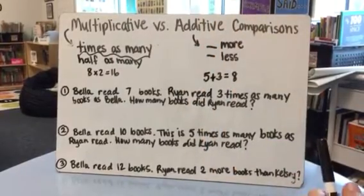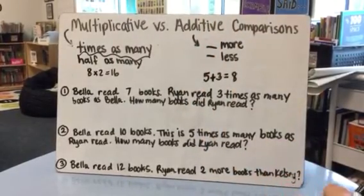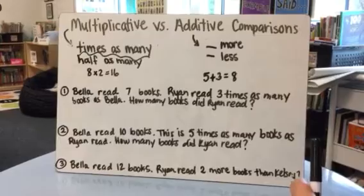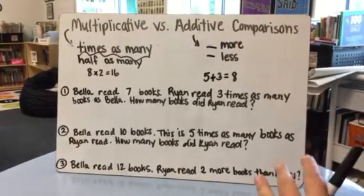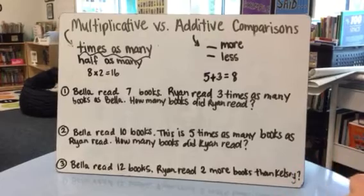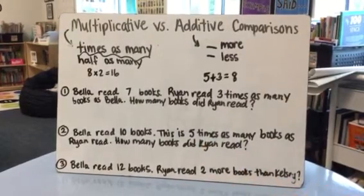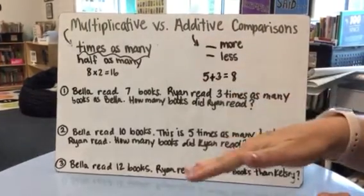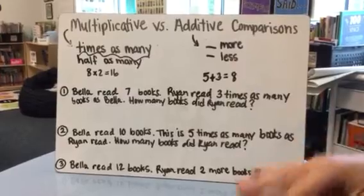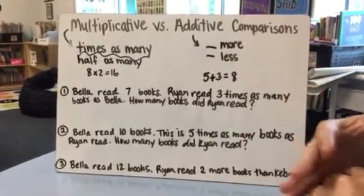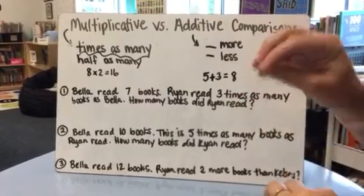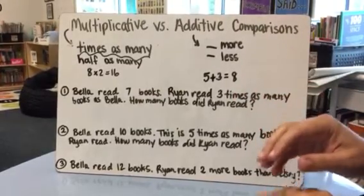I'm going to take you through three problems that we've been working on — setting up equations, thinking through the problem, making sure the answer is reasonable, and drawing a quick visual model to support our thinking. Tonight's homework requires students to identify whether something is a multiplicative or additive comparison. All three problems are about the same two people, Bella and Ryan, and reading books — pay close attention to how the phrasing and strategies change for each problem.